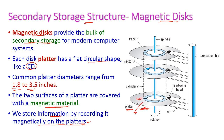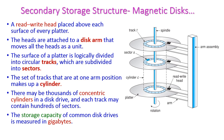A read/write head is placed above each surface of the platter. Since we can store information on both sides of a platter, two read/write heads are placed for one single disk — one on the top surface and one on the bottom surface.